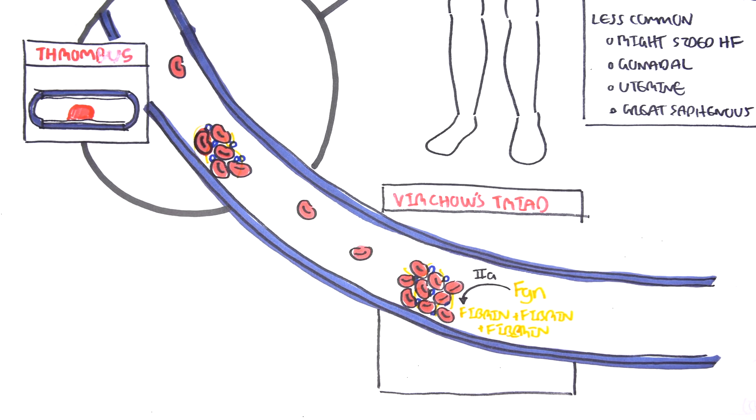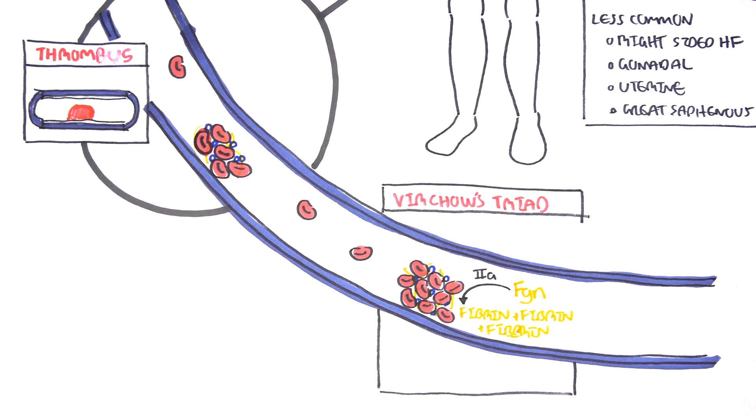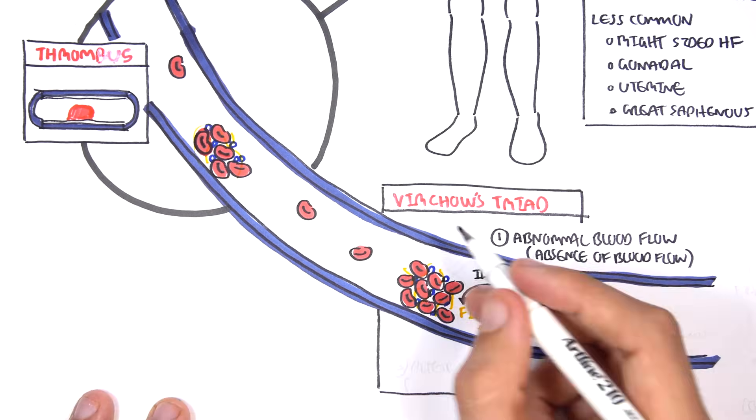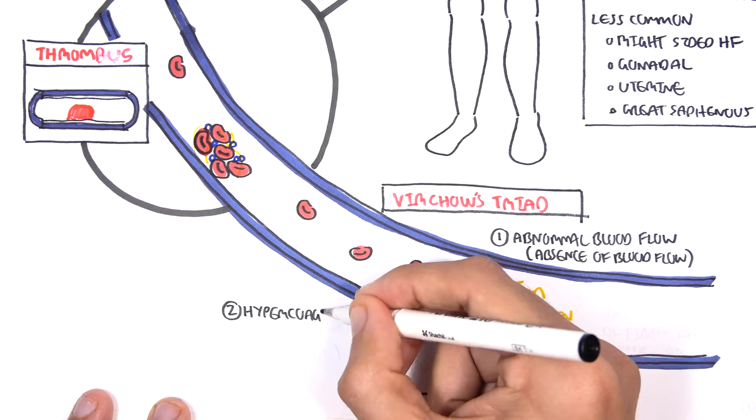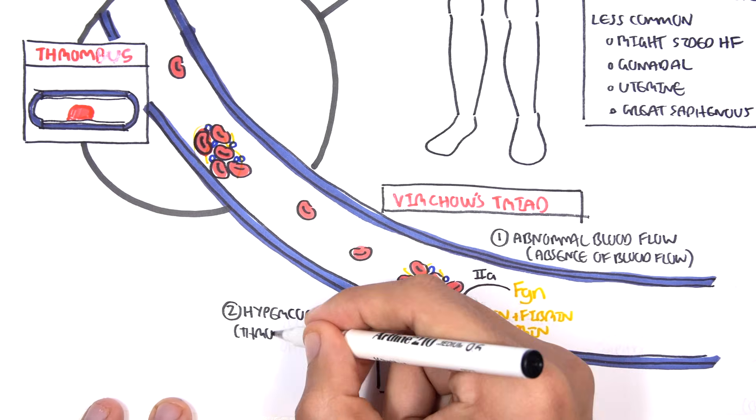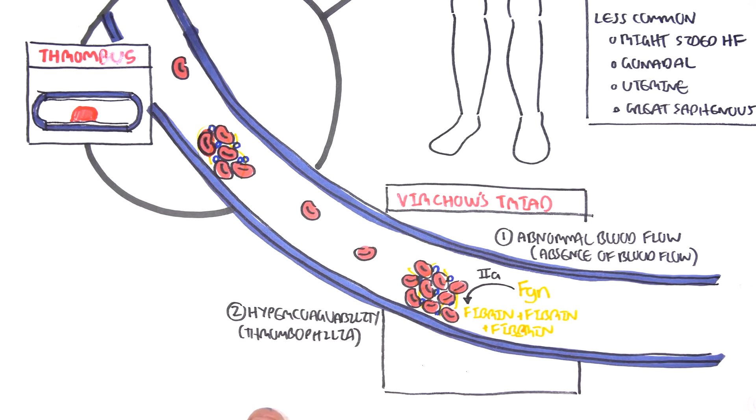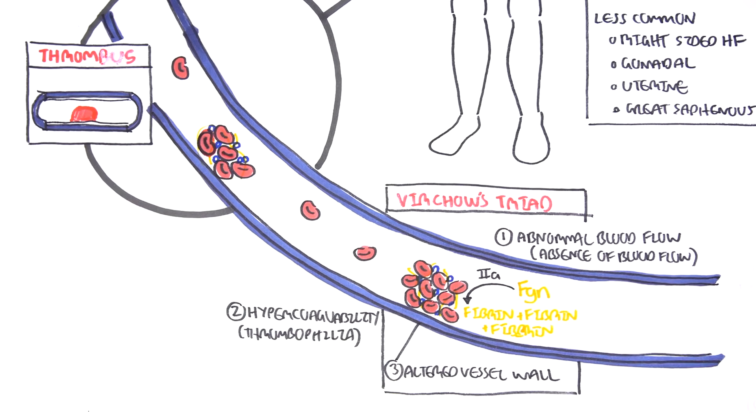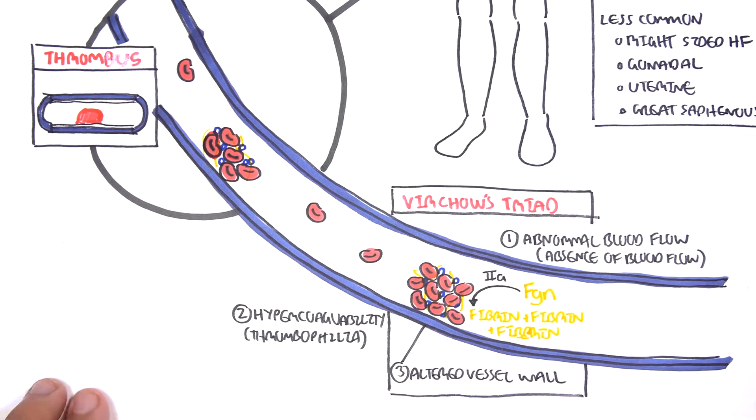And then you get this fibrin meshwork all clumping together causing thrombus formation. Virchow's triad are a triad of things that essentially promotes thrombus formation. These three things are: one, abnormal blood flow such as absence of blood flow; two, hypercoagulability such as thrombophilia; and three, altered vessel wall. These three things which make up Virchow's triad promote thrombus formation.